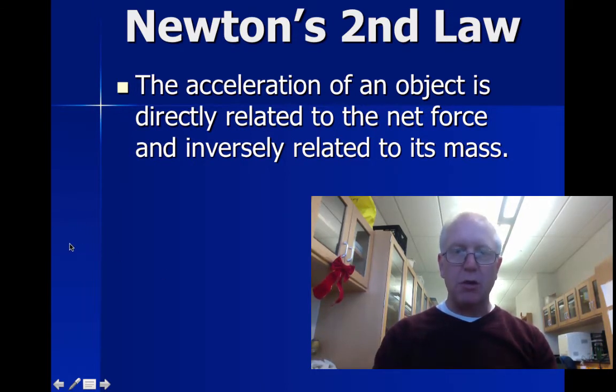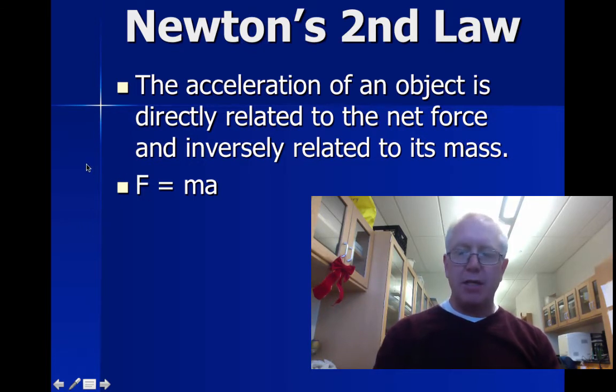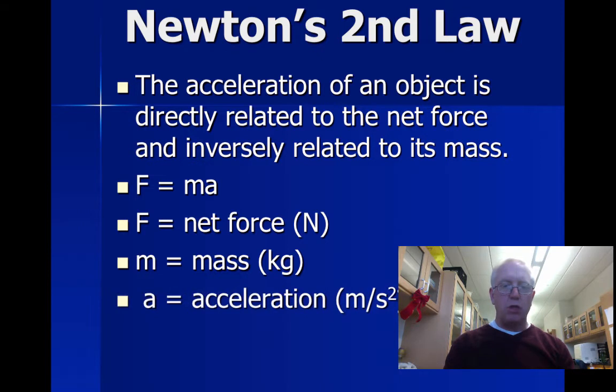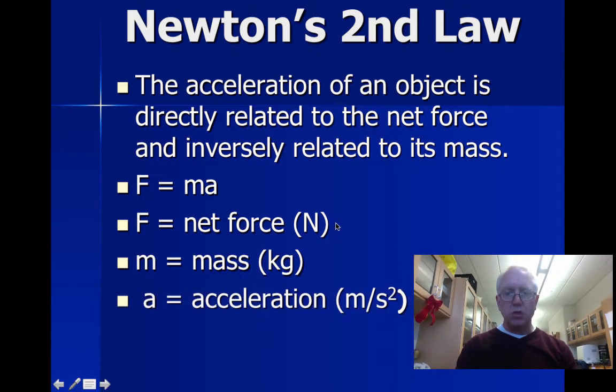Here is Newton's second law in a formula: F equals ma. F is the net force, m is the mass, and a is the acceleration. Since a newton is a derived unit, the mass has to be in kilograms and the acceleration will be in meters per second squared in order to come up with that derived unit, the newton.